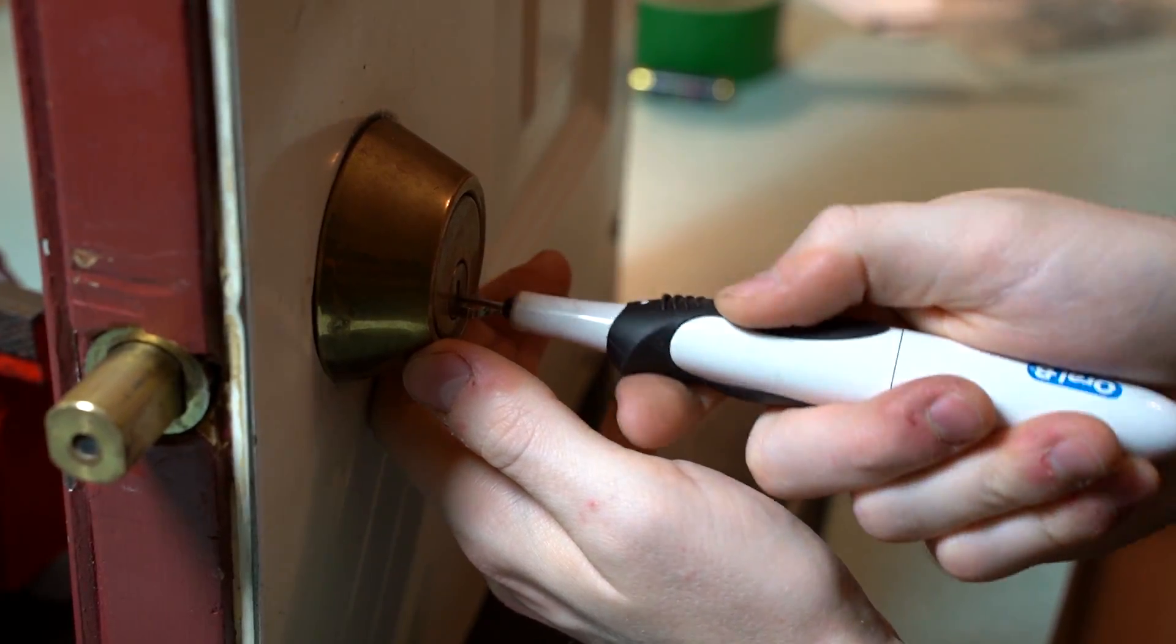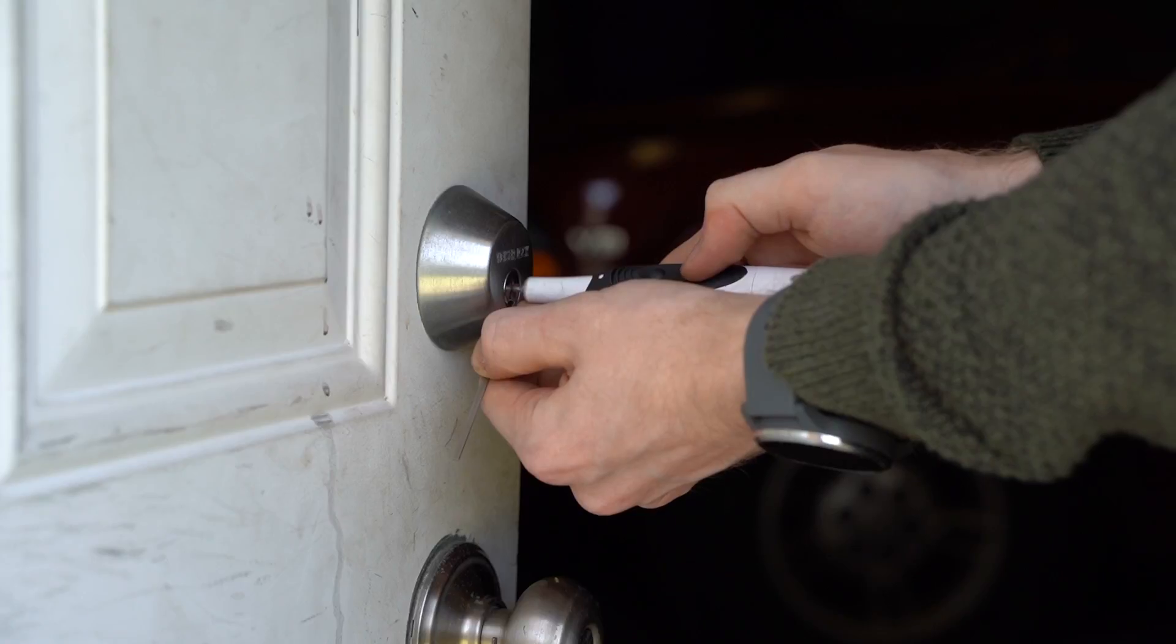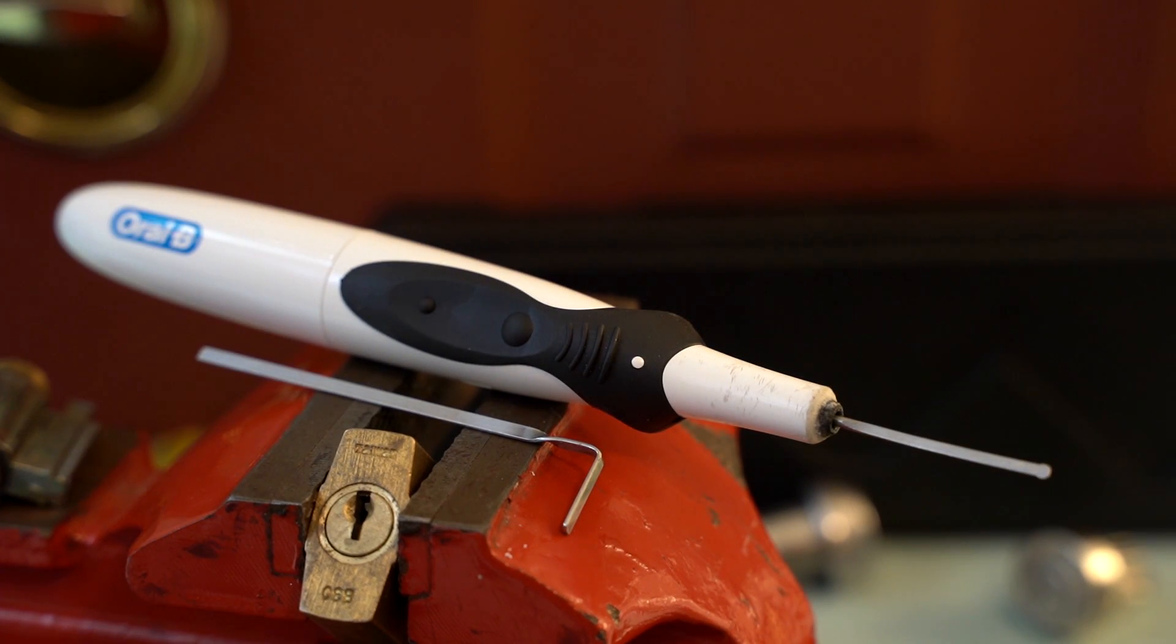They are an easy to use method for opening locks and can sometimes open a lock door in seconds and other times it can't open it at all. Electronic lock picks can be expensive but one can be made from a cheap electric toothbrush.